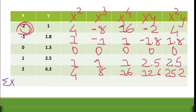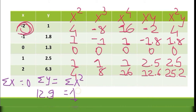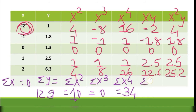The sigma values are: sigma x = 0, sigma y = 12.9, sigma x² = 10, sigma x³ = 0, sigma x⁴ = 34, sigma xy = 11.3, and sigma x²y = 33.5.